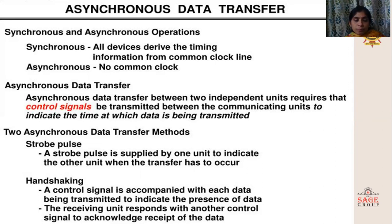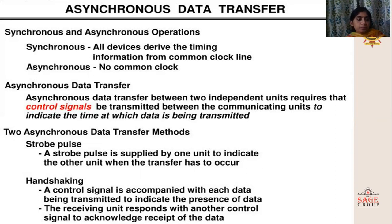There is no fixed timing between the sending of groups of data. But in case of Synchronous Transmission, the timing is very important. The sender and receiver will derive the timing information from a common clock line. This synchronous data transfer method is again divided into two types: strobe pulse and handshaking.